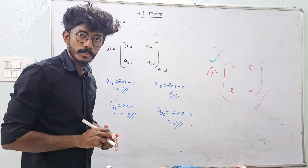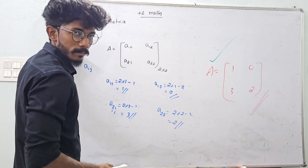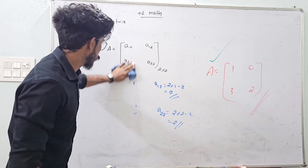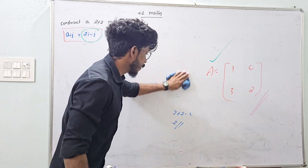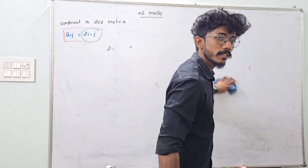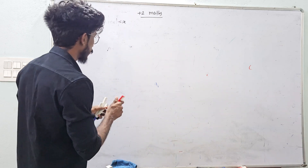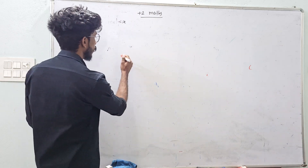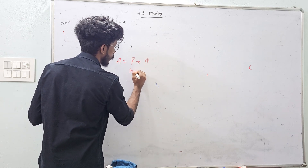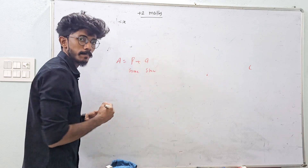Is it clear? Let's go to the exam. That's the first model. Let's take a look at the second model. There is a matrix — express the given matrix as the sum of a symmetric or skew-symmetric matrix.